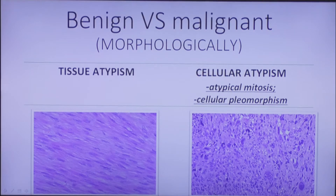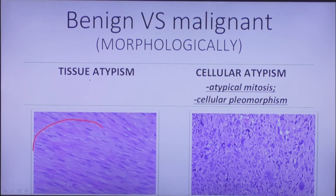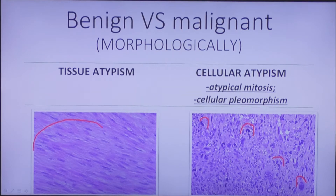If you look under the microscope at a benign tumor, you will see that it resembles the tissue of origin — only the ratio of stroma and parenchyma will be altered, which is called tissue atypism. In malignant tumors, cellular atypism will be present: we will see atypical mitosis, hyperchromatic nuclei, and the tissue itself will not resemble its original precursor.